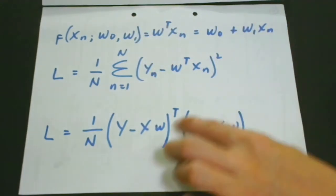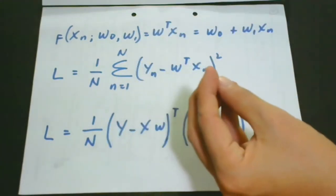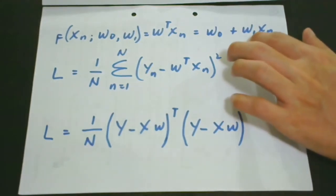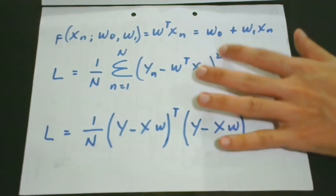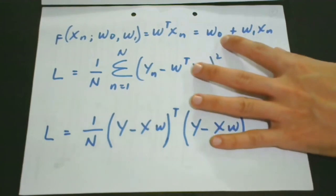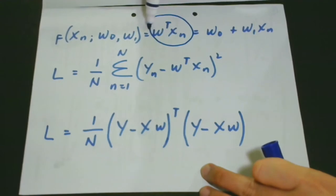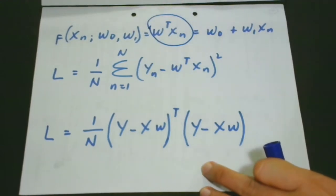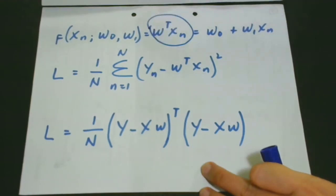What does this mean? What is the underlying action in this expression? We can replace any instance of w0 plus w1 xn just by using the transpose of w times xn.